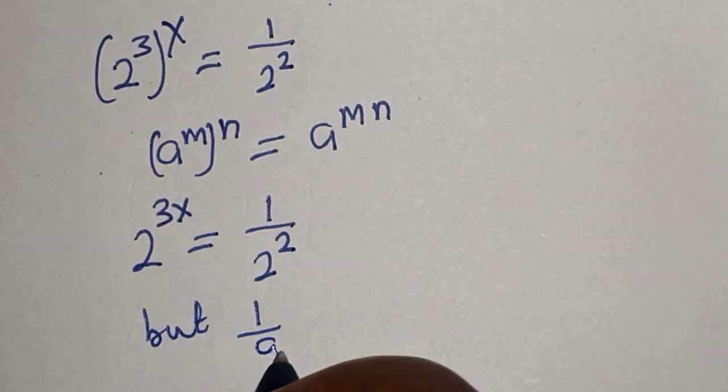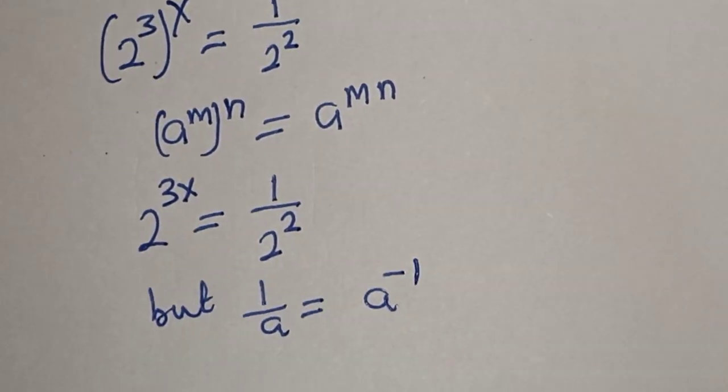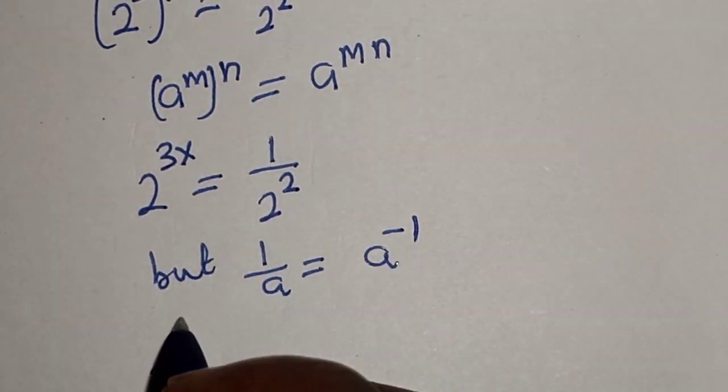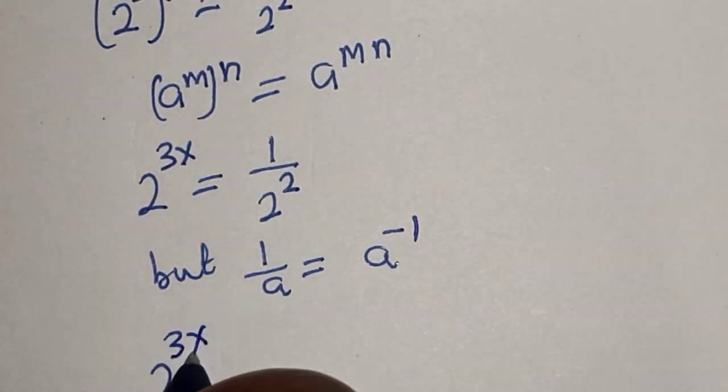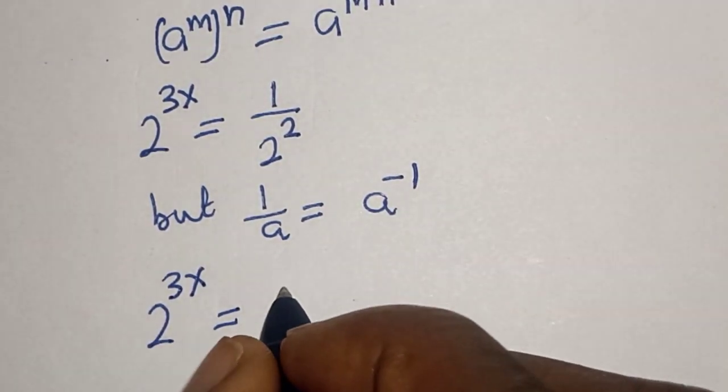But 1 over a equals a raised to the power of minus 1. Then 2 to the power of 3x equals 2 to the power of minus 2.